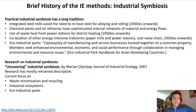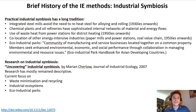Industrial symbiosis has a long tradition in industry. Early integrated steel mills are a first example, since they avoid the need to reheat steel during alloying and rolling — a practice dating back to the 1930s. The same applies to chemical plants and oil refineries, as well as the co-location of energy-intensive industries. A typical example is locating paper mills close to coal power stations to use the waste heat from the power station to dry the paper.